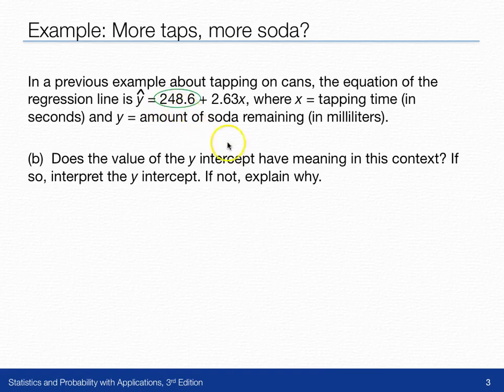So in this problem, the 248.6 is the y-intercept. Does it have any meaning? It does. It means that the regression line passes through the point (0, 248.6). So what does that mean? What does that ordered pair mean?